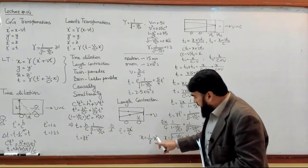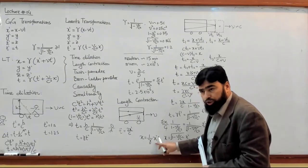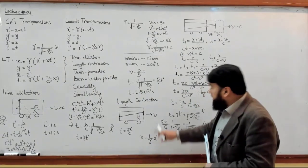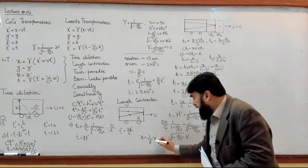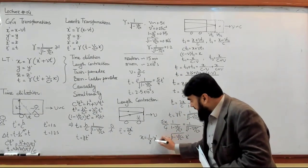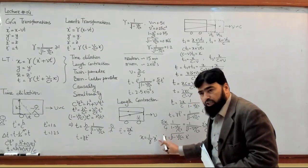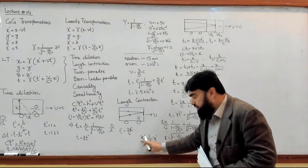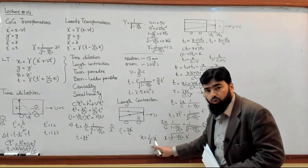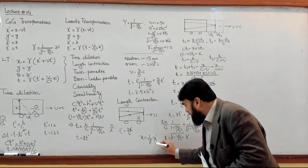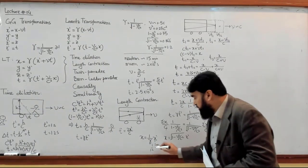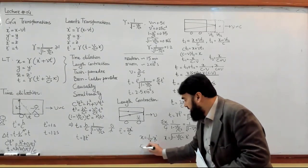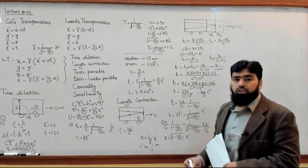From here you can now assess the situation. Consider those previous speeds — if the box is moving with this speed, what about x and x prime? Let us say x prime measures the length as 1 meter. Then how much does x measure? 1 meter divided by 1.2 — so less than 1 meter. If x prime measures 1 meter, then x measures 1 by 1.2.